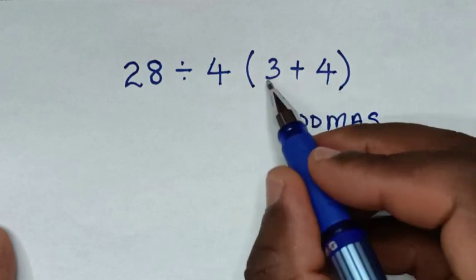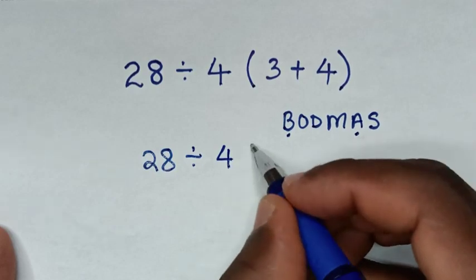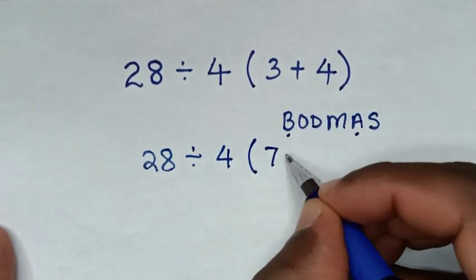Of 3 plus 4 it is 7. So it will be 28 divided by 4 bracket this plus this is 7 then bracket.